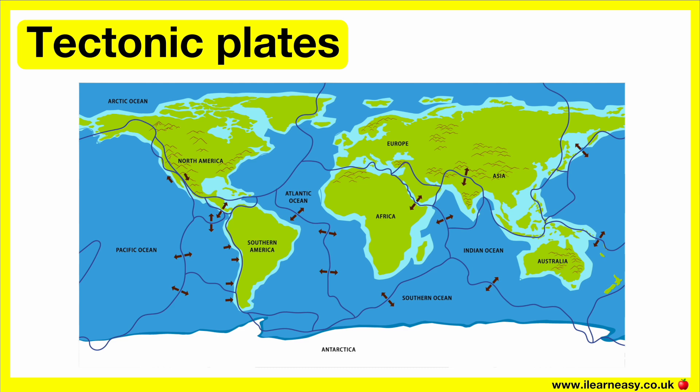The movement is small, about 2 to 15 centimeters per year. The theory of plate tectonics explains how the movement of these geologic plates creates major landforms, such as mountain building, volcanoes, and earthquakes. The theory was solidified in the 1960s.